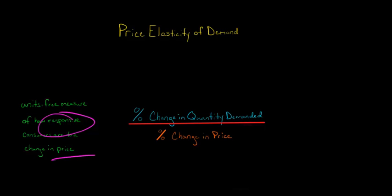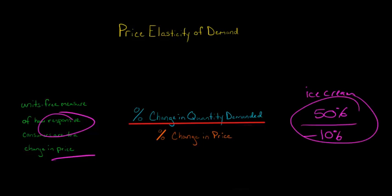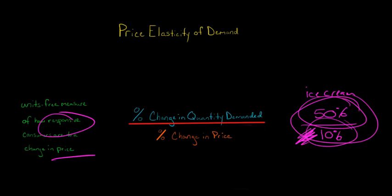For example, let's say we're talking about ice cream. If there was a 10% decrease in the price of ice cream, then people would increase the quantity they are demanding by 50%. So you take 50% divided by 10%, and you ignore the negative sign — we know that if price goes up, demand goes down. So you just take 50% divided by 10, and you get five.